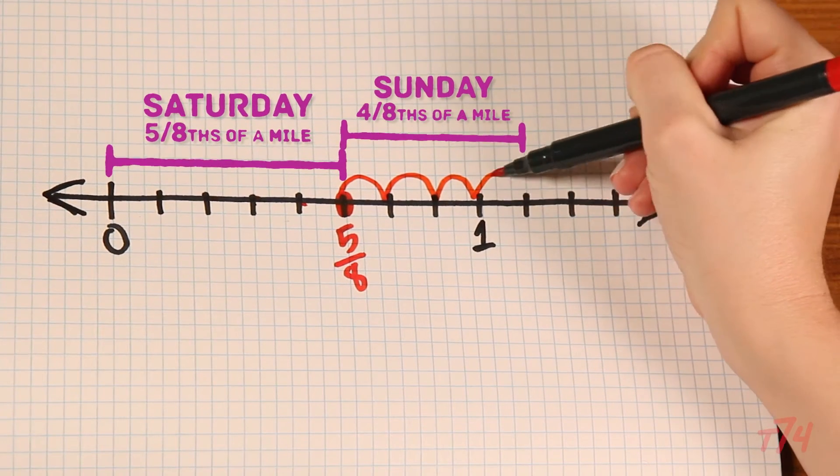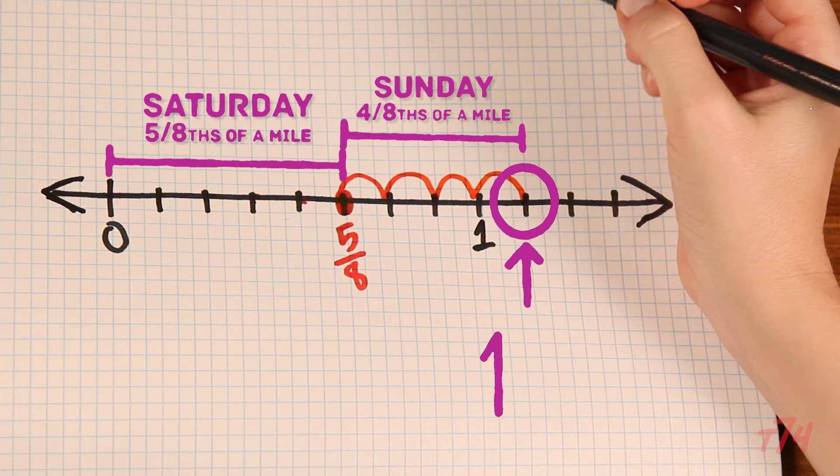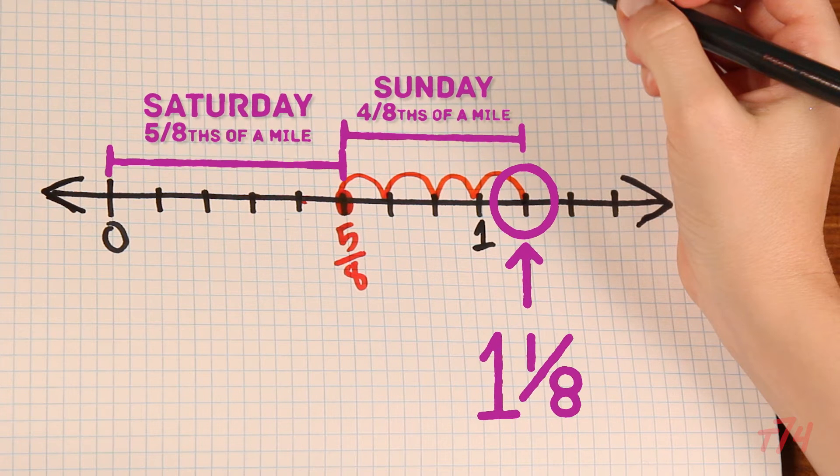Now we count and plot the additional 4/8 of a mile on the number line. Of course he goes over the one mile mark. And if I look at the model, the number line, it's easy for me to see that that's 1 and 1/8.